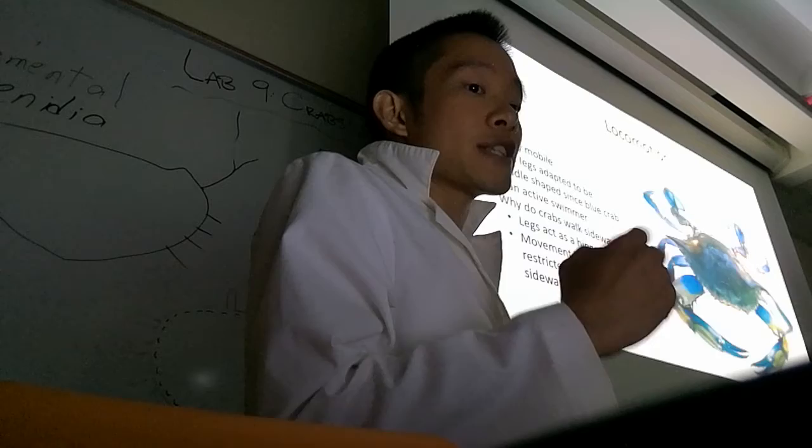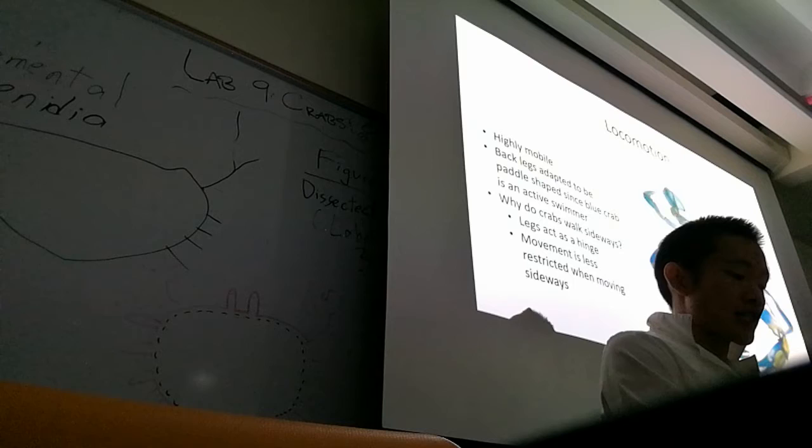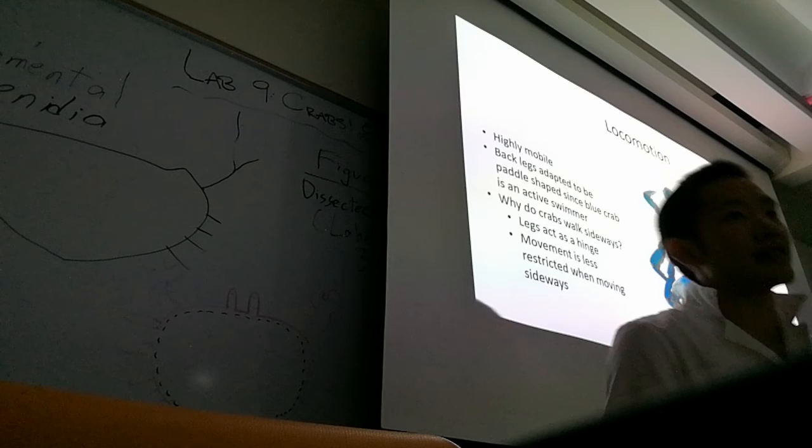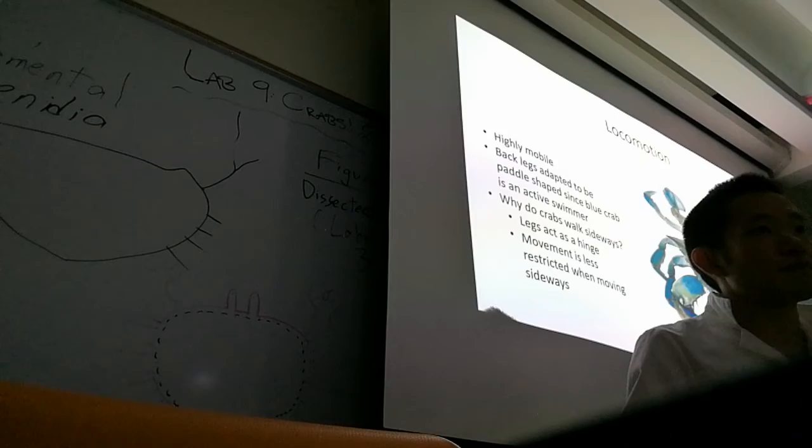As far as why crabs walk sideways - if you look at our knees, our knees point forward and bend forward. For crabs, it's sideways. Crabs have their legs on the side, and it's a lot more efficient for them to move sideways because of that. That's the way that their legs bend.